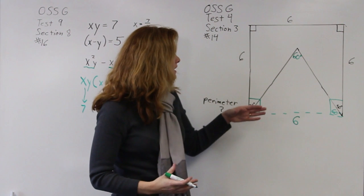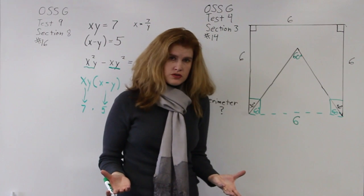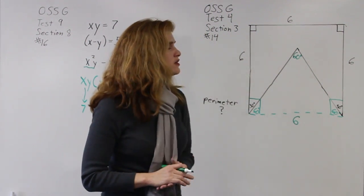Anytime you have a triangle that has all equal angles that are all 60 degrees, that means it also is an equilateral triangle. So that means all the sides are equal too.